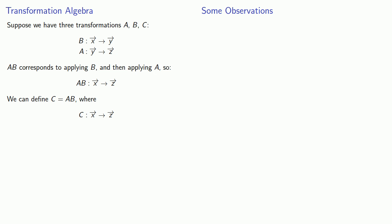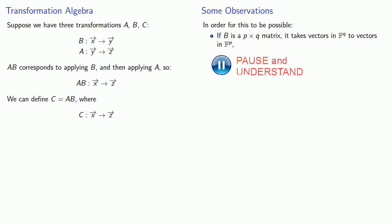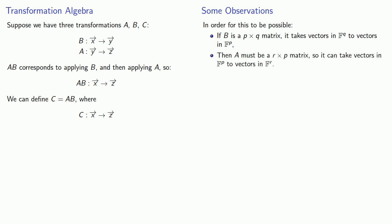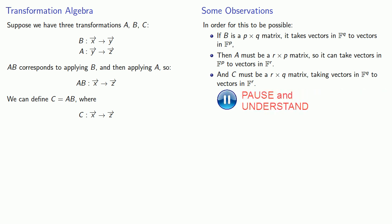Let's make a few quick observations. In order for this to be possible, if b is a p by q matrix, it will take vectors in F^q to vectors in F^p, where F is our underlying scalar field. Since a takes vector y to vector z, a must be an r by p matrix, so we can work on vectors in F^p and send them to vectors in F^r. Which means that c has to be an r by q matrix, which will take vectors in F^q and send them to vectors in F^r.